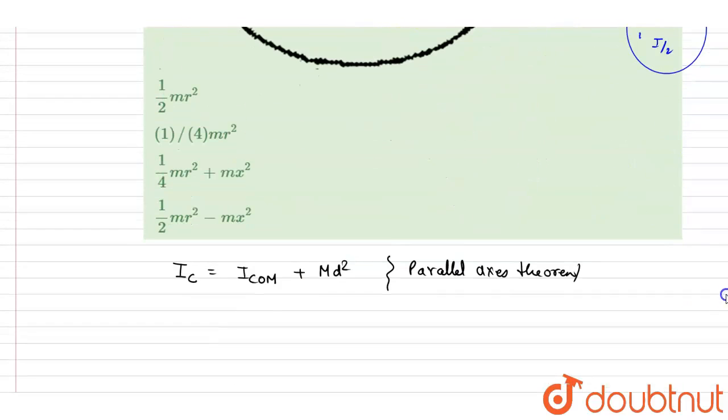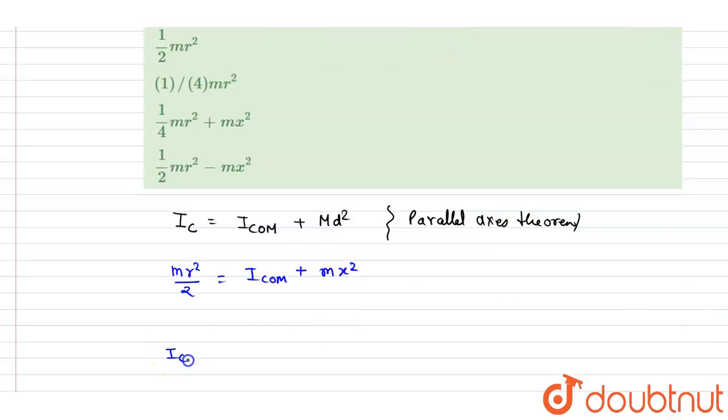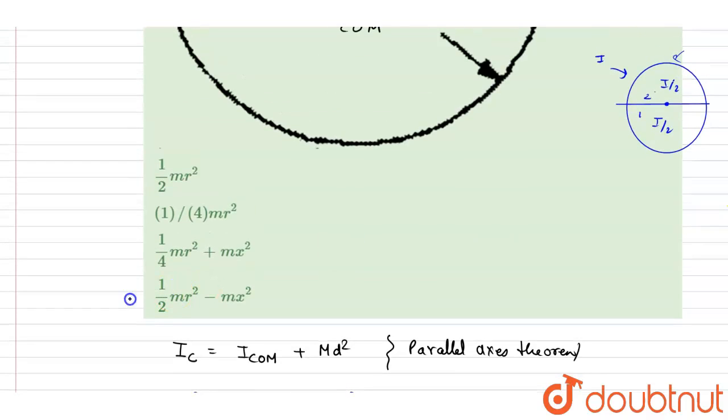So if you see, this will have the same moment of inertia as that of the circular disc, that is mr²/2. And it is center of mass passing axis plus mx². And we want the I_com, so we'll write down I_com equals mr²/2 minus mx². Now you can check for the option here, this is the correct answer.